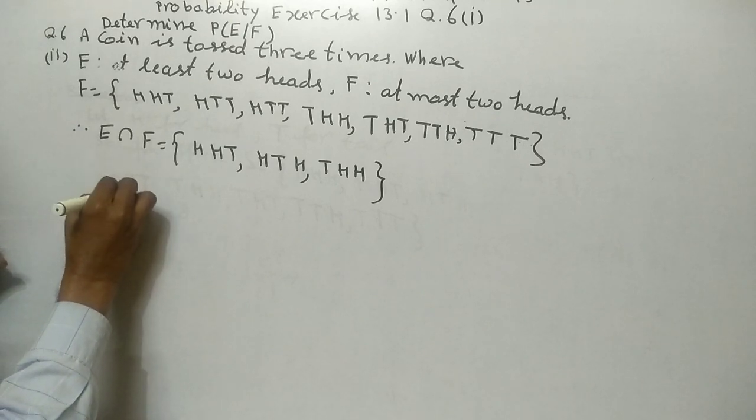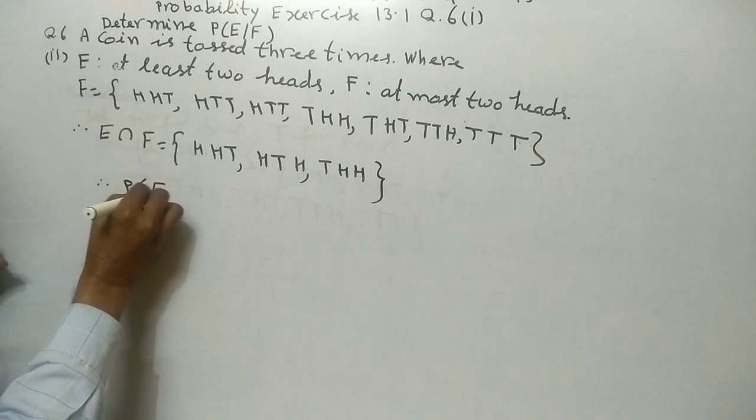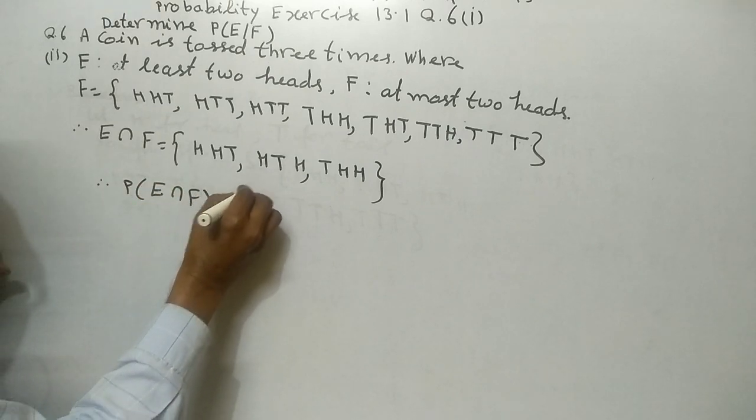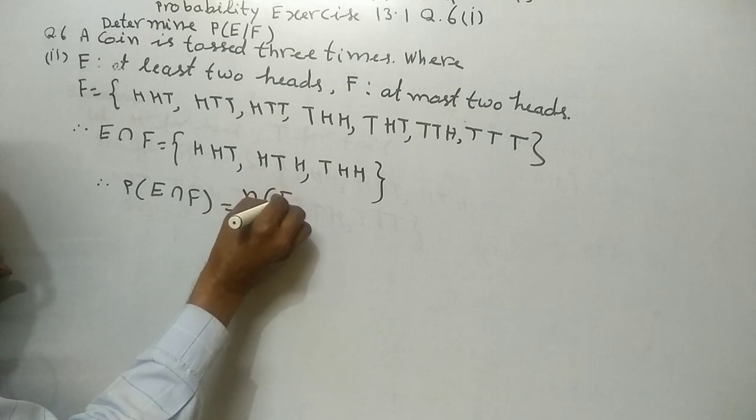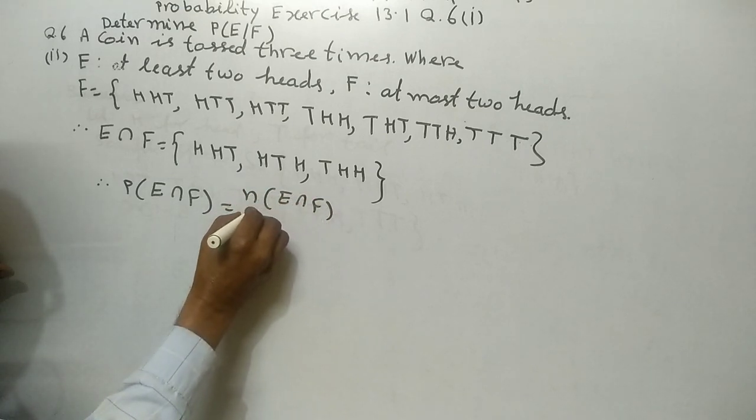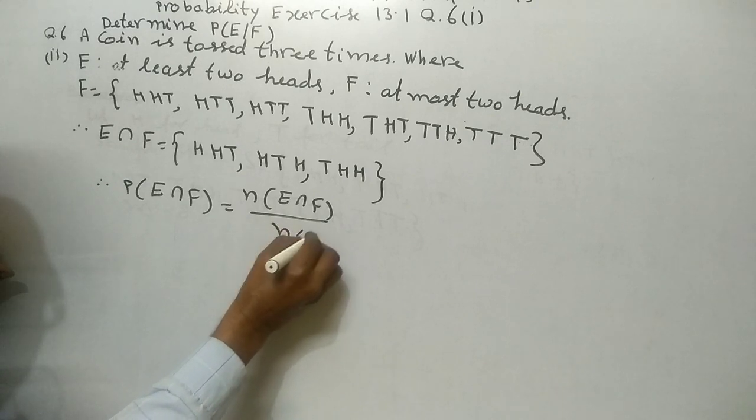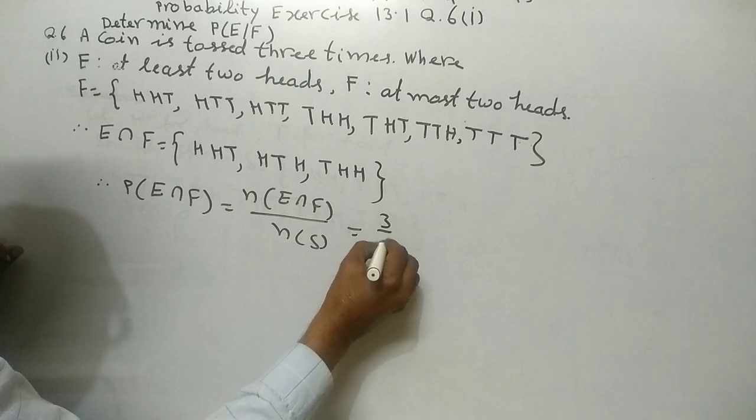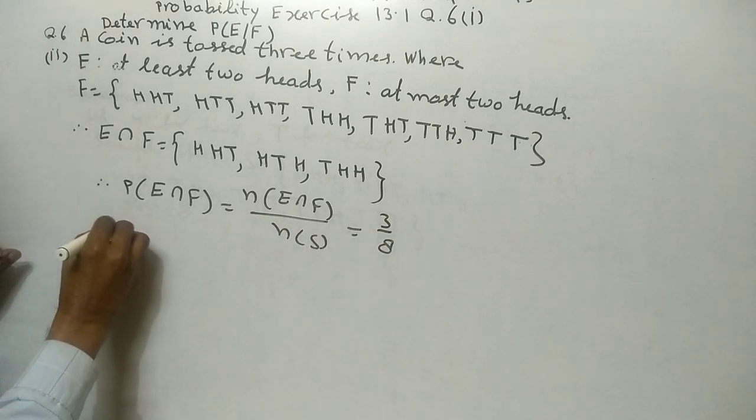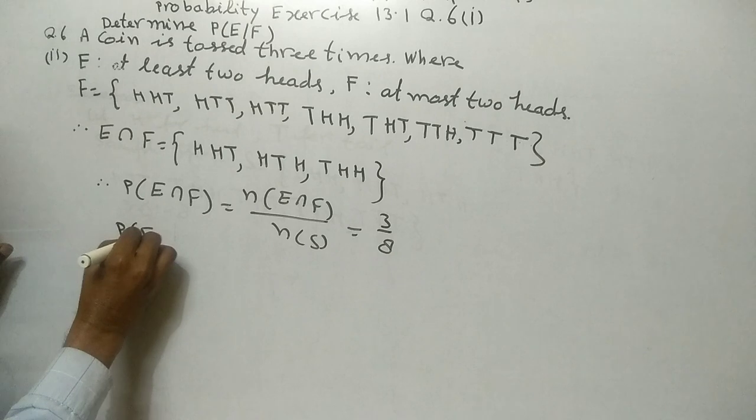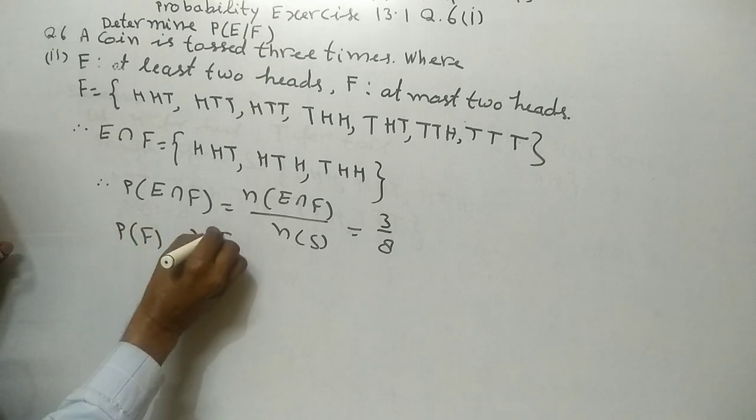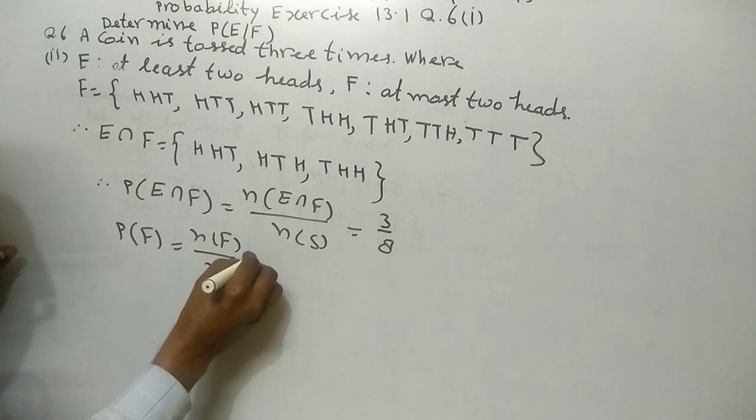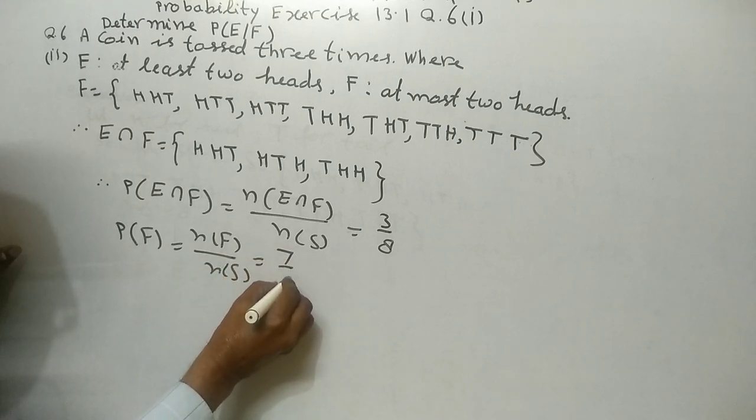Therefore, probability of E intersection F equals n(E∩F) upon n(S) equals 3 upon 8. Probability of F equals n(F) upon n(S) equals 7 upon 8.